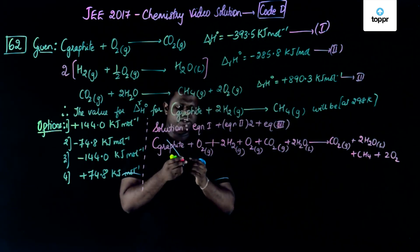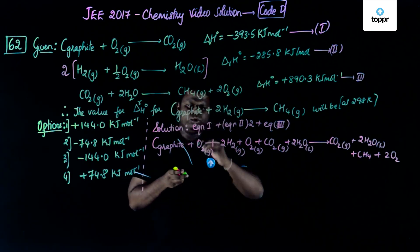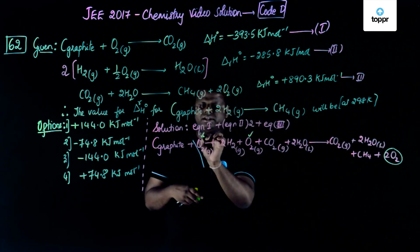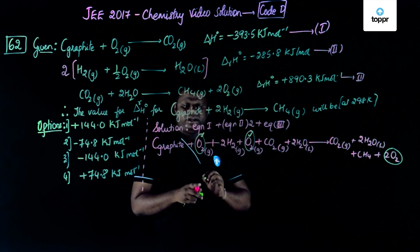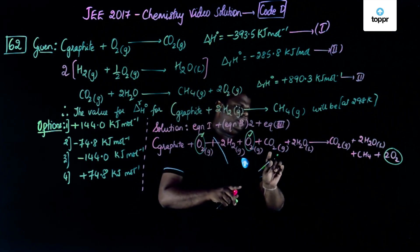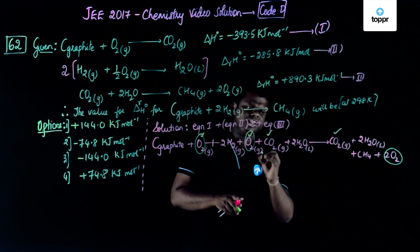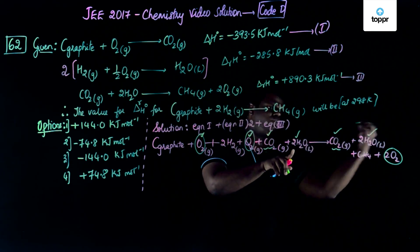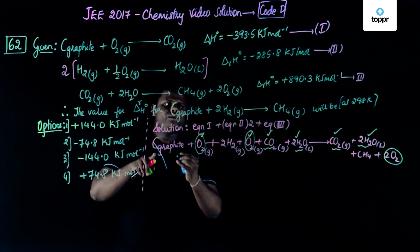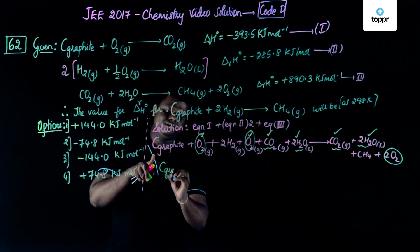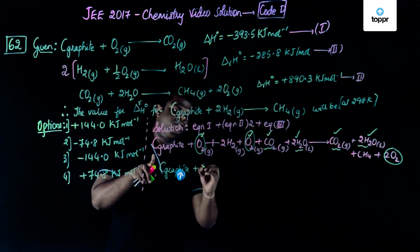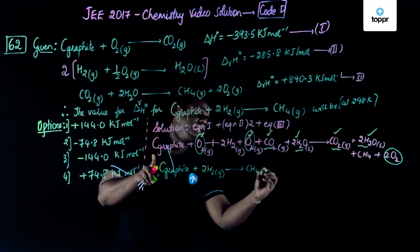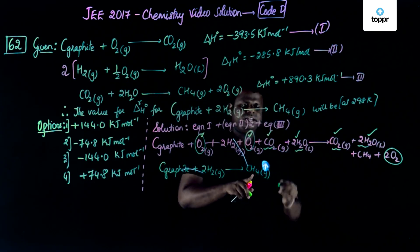Let's try to cancel the common terms. You have O2 and O2, and here you have 2O2, so these terms could be cancelled. Similarly, you have CO2 over here and CO2 over here, even these terms could be easily cancelled. Similarly, you have 2H2O over here and 2H2O over here, these could also be cancelled. So the final equation which you could get is C graphite plus 2H2 in the gaseous form would give me CH4 in the gaseous form. This is the required equation which we should get.